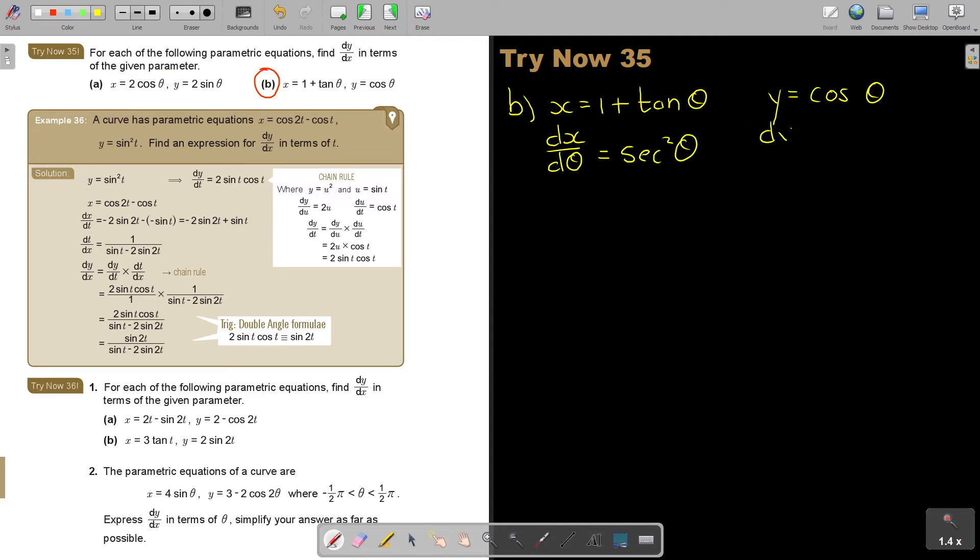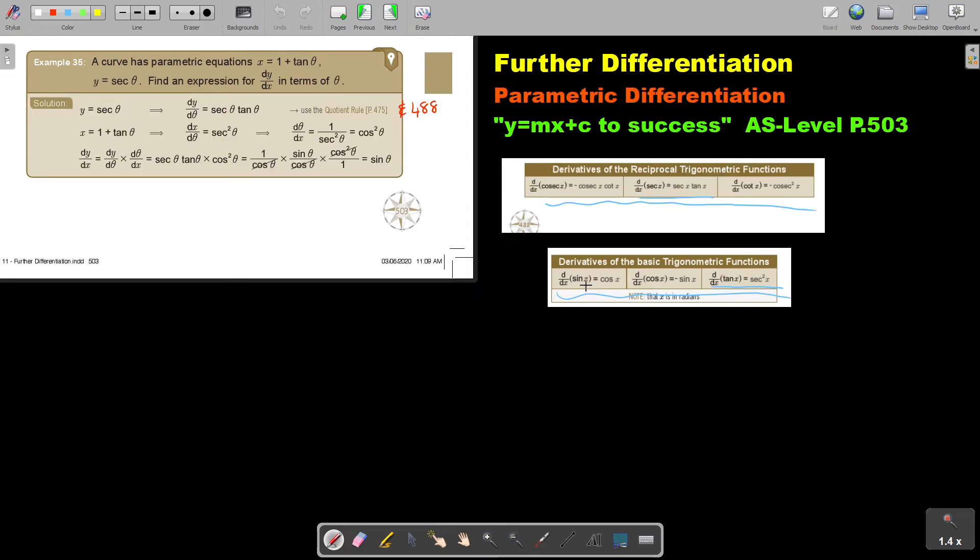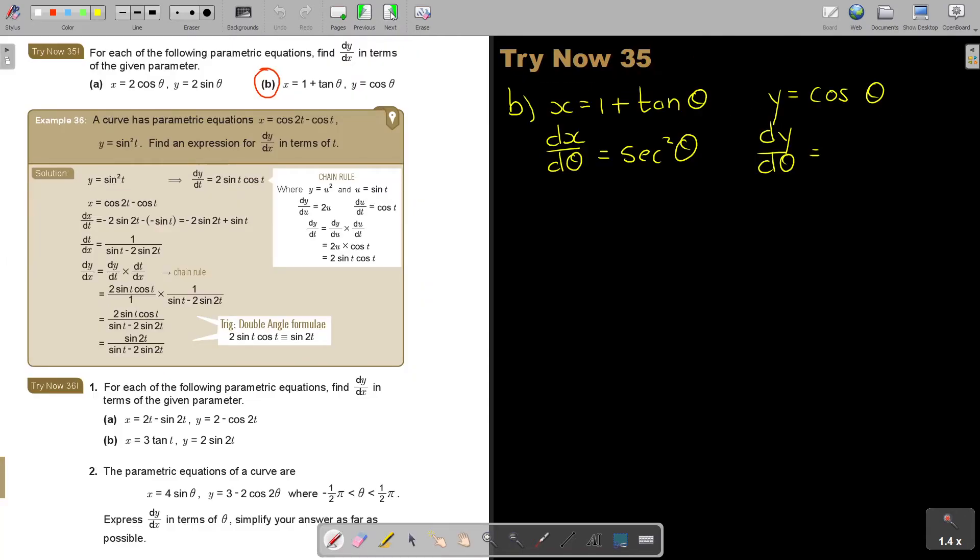And then, dy over d theta. And then, can you remember cos? And can I show you again? If you cannot recall, cos, look there. Cos, so it's negative sin theta. So negative sin theta.